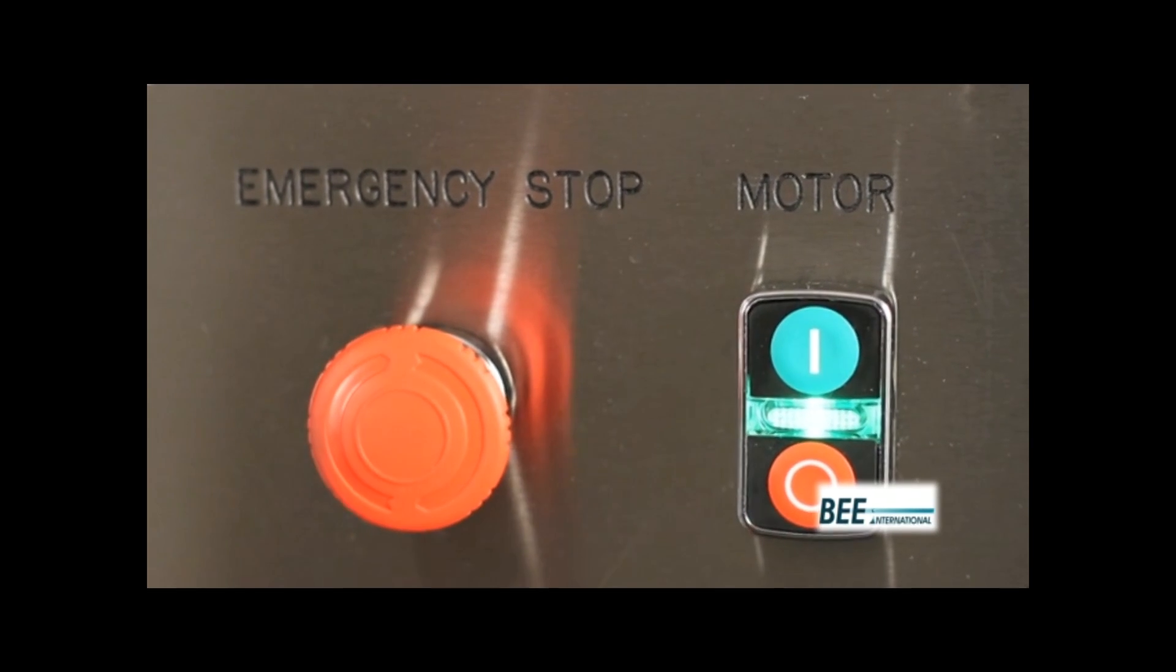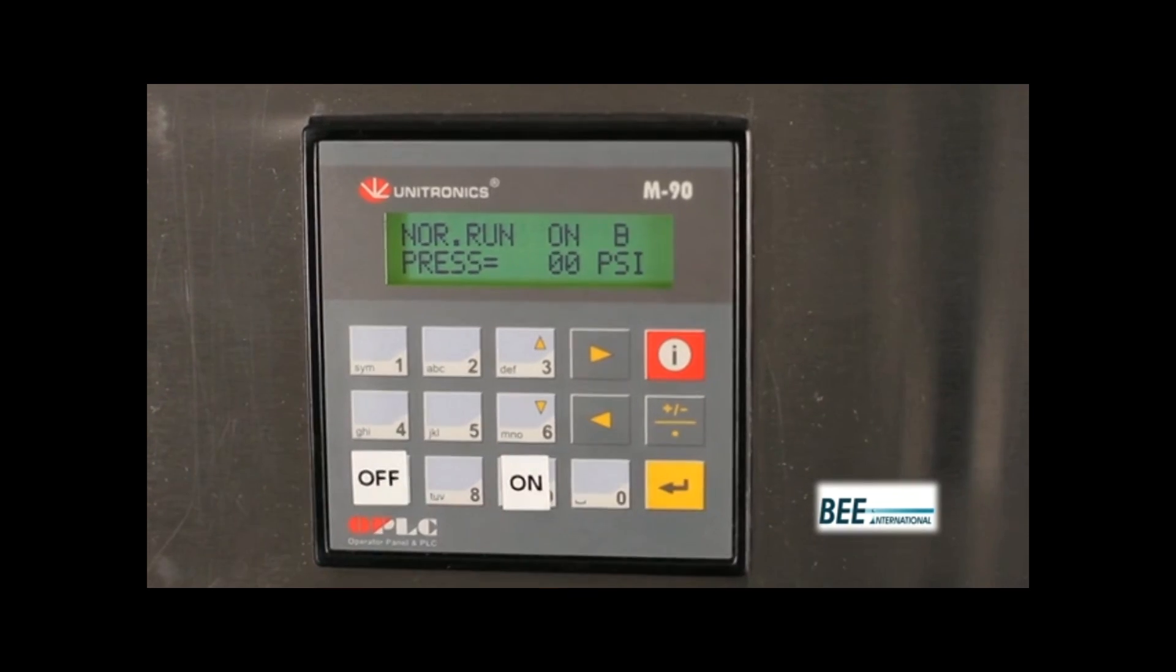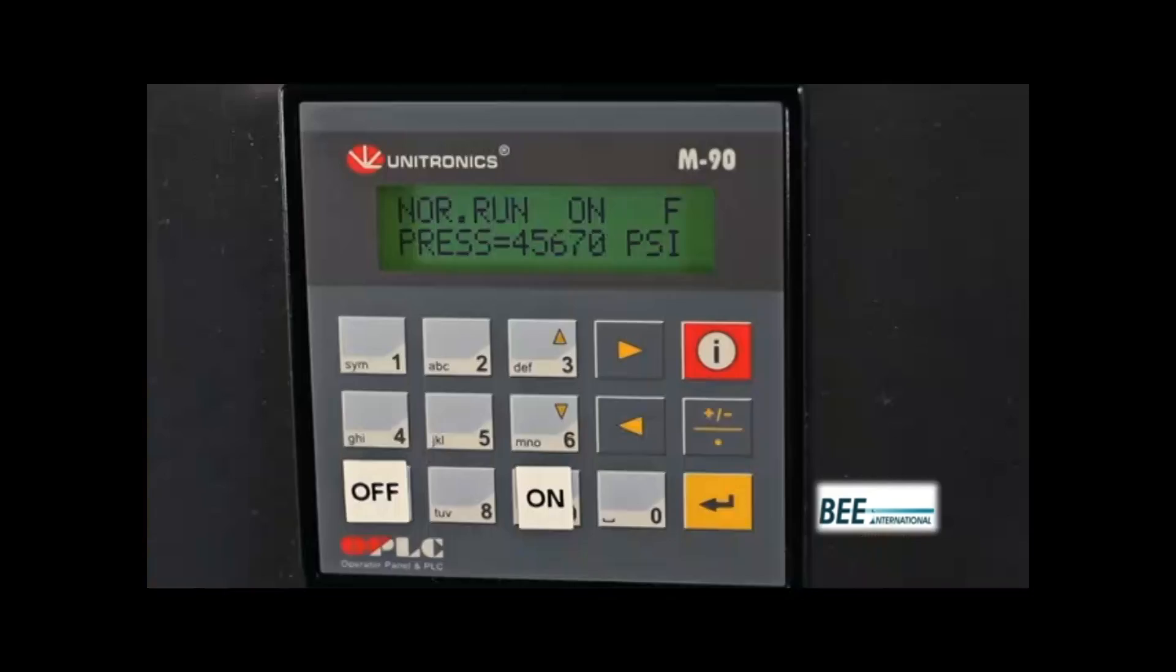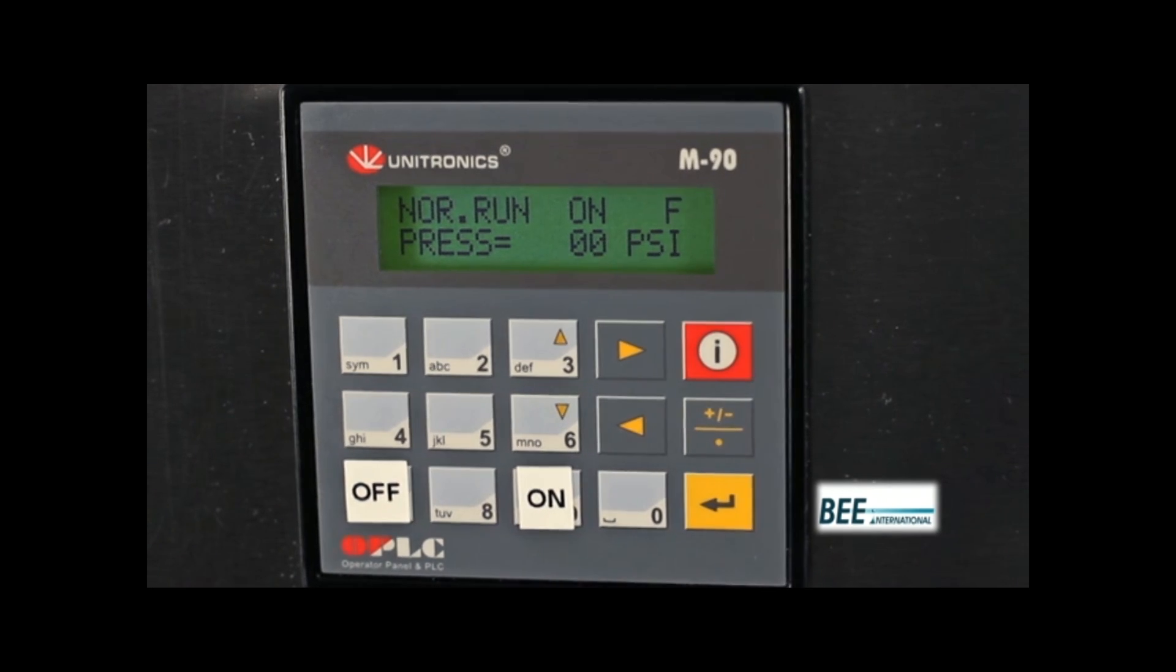Turn on the intensifier pump by pressing the on button on the PLC display. Process pressure is displayed on the PLC. Turn the pressure set dial to adjust the process pressure anywhere up to 3,100 bar or 45,000 PSI.